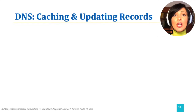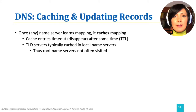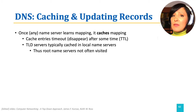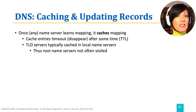Once a name server learns a mapping or a record, it caches that mapping. For example, TLD servers are typically cached in local name servers so that root name servers are not very frequently visited.